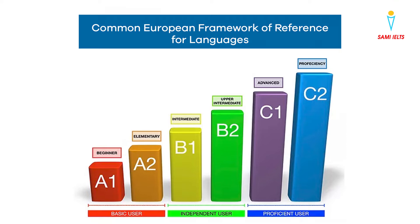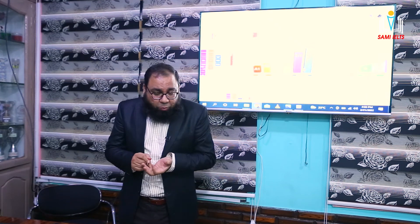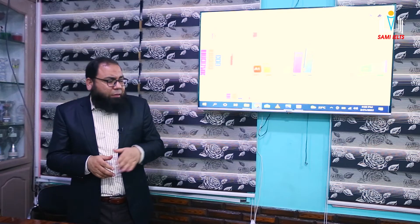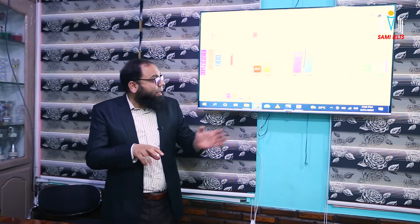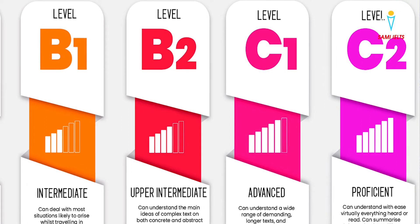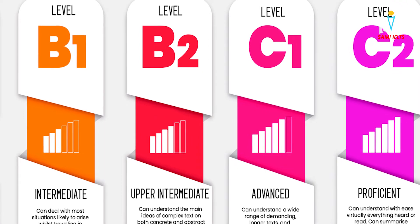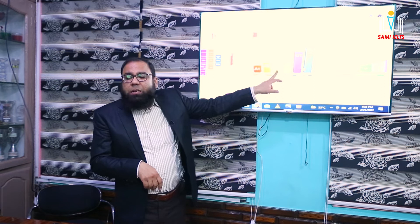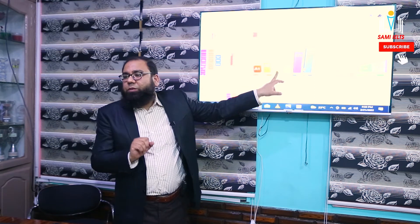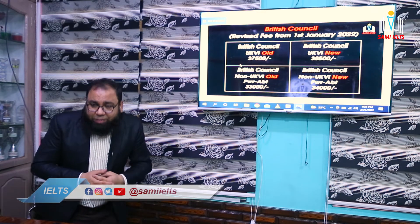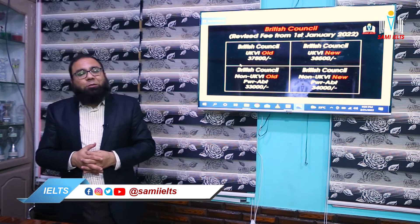The CEFR level starts from A1 and ends at C2 — C2 is the highest and A1 is the lowest. Most students start from B1 and progress through B2, C1, and C2. If you get even B1, you are still eligible to go to the UK on a foundation visa. B2 and above allow more options including C1 and C2.